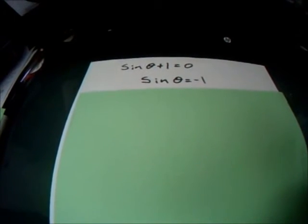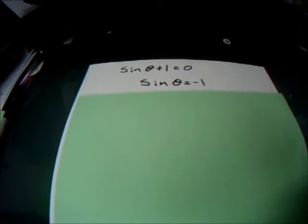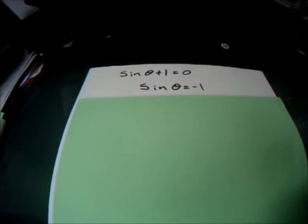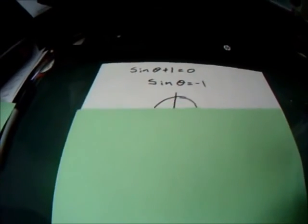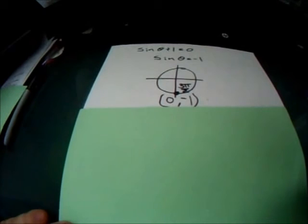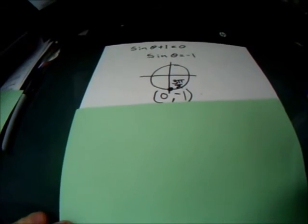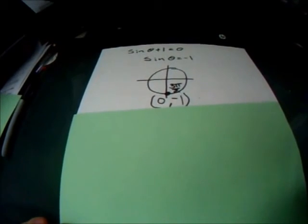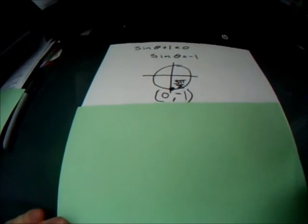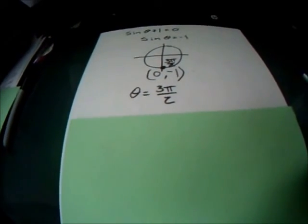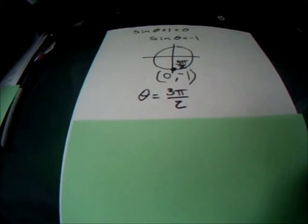Now we need to find where the y value on the unit circle is negative 1. There's only one place for that, and that is at the bottom of the unit circle where x is 0 and y is negative 1. And that value happens to be 3 pi over 2. So our theta for this side of the problem is 3 pi over 2.